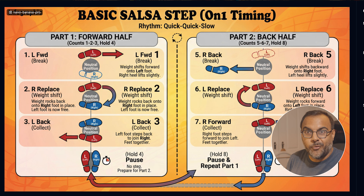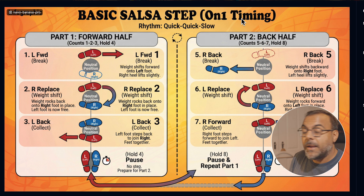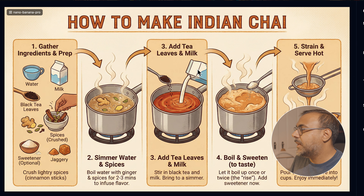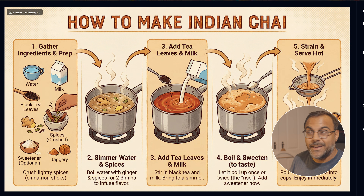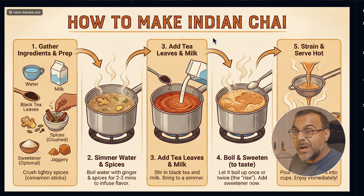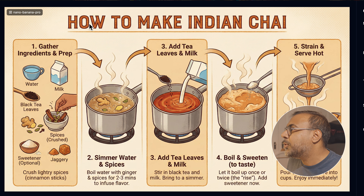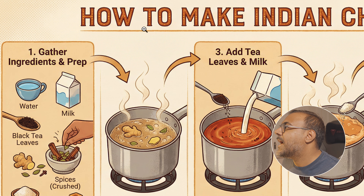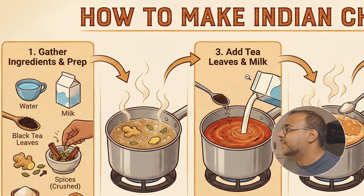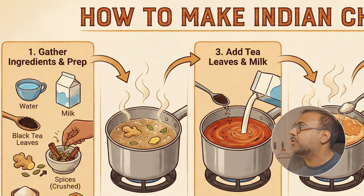Over here we've got an infographic for learning a basic salsa step, and it looks correct to me on one timing — so depending on the version of salsa, there's one timing or two timing, and it's got the steps. Here is an infographic on how to make Indian chai, complete with little details in the font that give it that special touch. These are 2K images, and it's putting in these little details without artifacting. If we zoom in, you can see there's enough detail with the squiggles and dots without artifacting — and it's only able to do this because of the higher resolution.